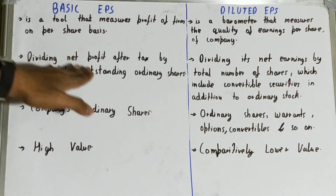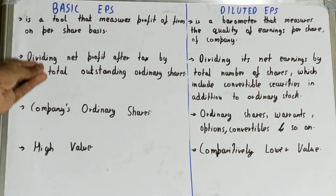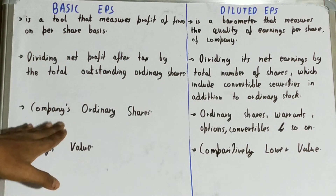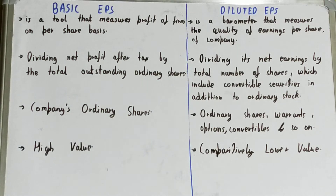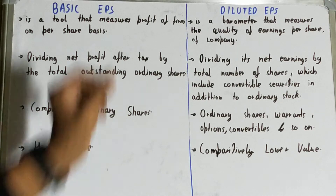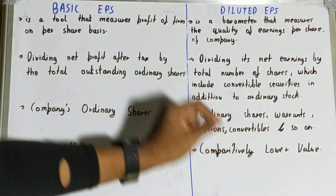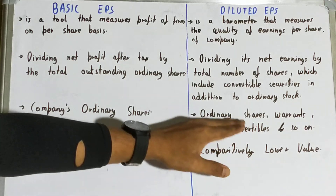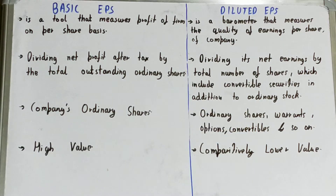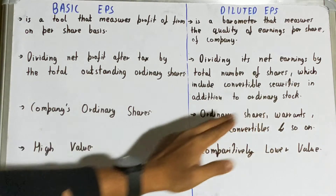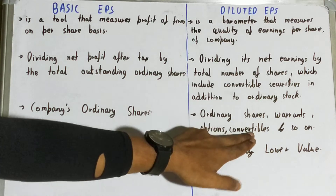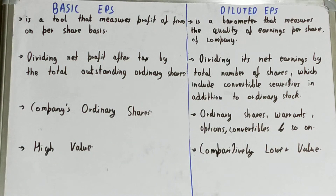Basic EPS includes only ordinary stocks — that is, the company's ordinary shares. But in the case of diluted EPS, it includes ordinary shares as well as warrants, options, convertibles, and many more.